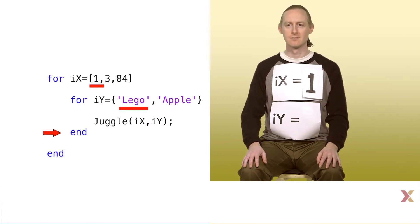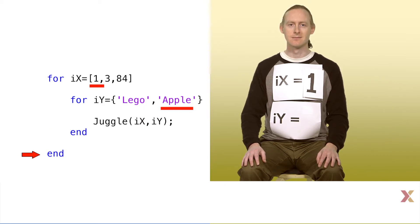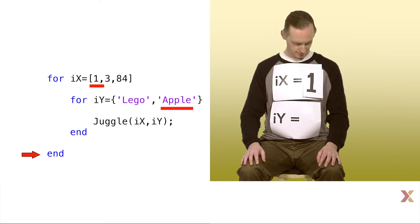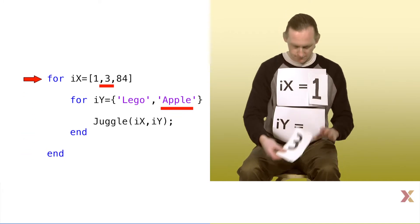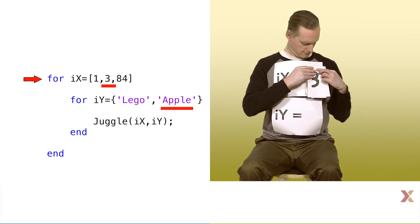When the end is hit this time, there are no more values in the iy array. MATLAB proceeds to the next line of code, which is another end statement, this time for the outermost loop. Now we increment the value in ix to the second element of the array, the value 3.